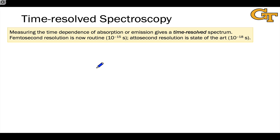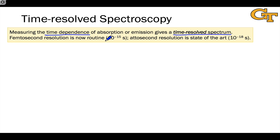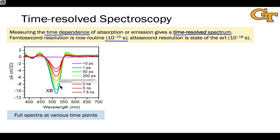Finally, time-resolved spectroscopy measures the time dependence of absorption or emission to give a time-resolved spectrum, with time on the x-axis and absorption or emission at a characteristic wavelength on the y-axis. These can also be shown in three dimensions with the full absorption or emission spectrum as a function of time, or as full spectra at various time points plotted with different lines on a legend.